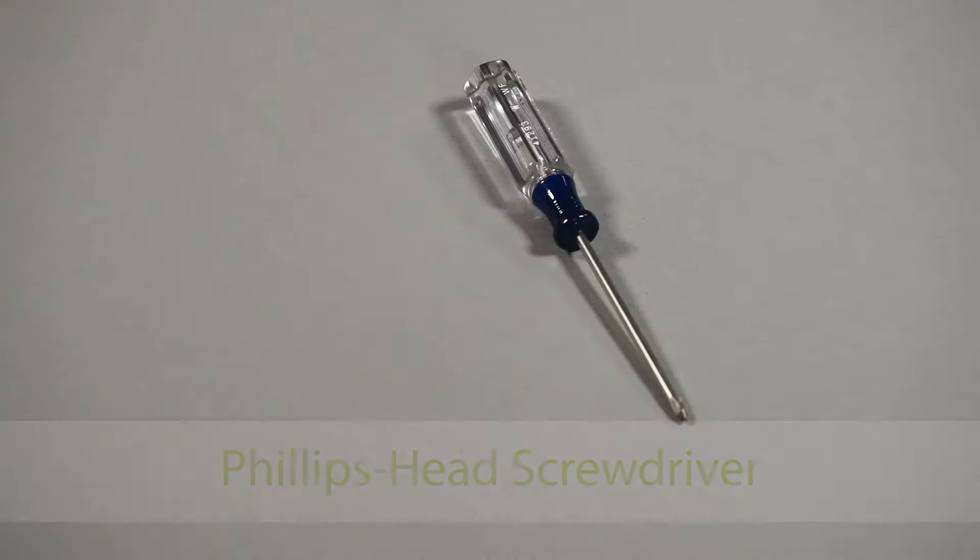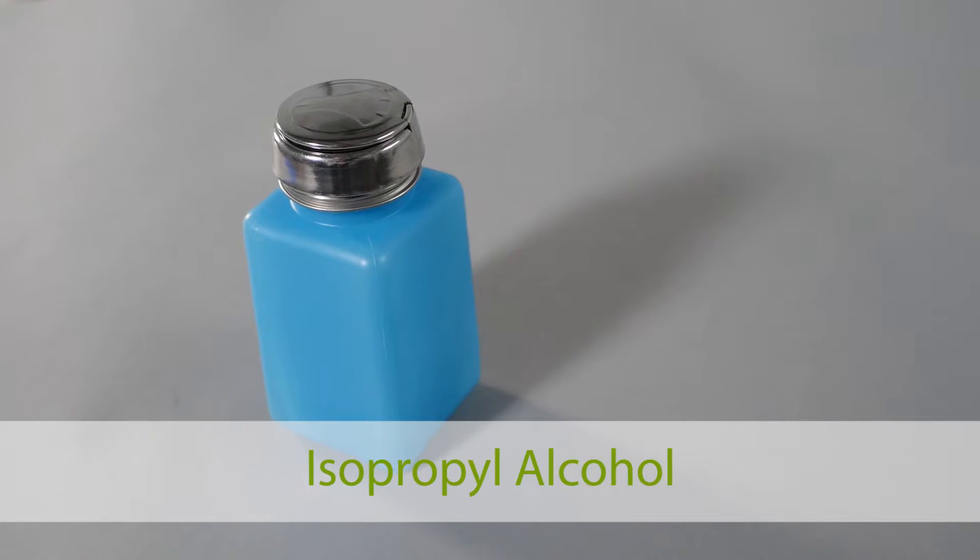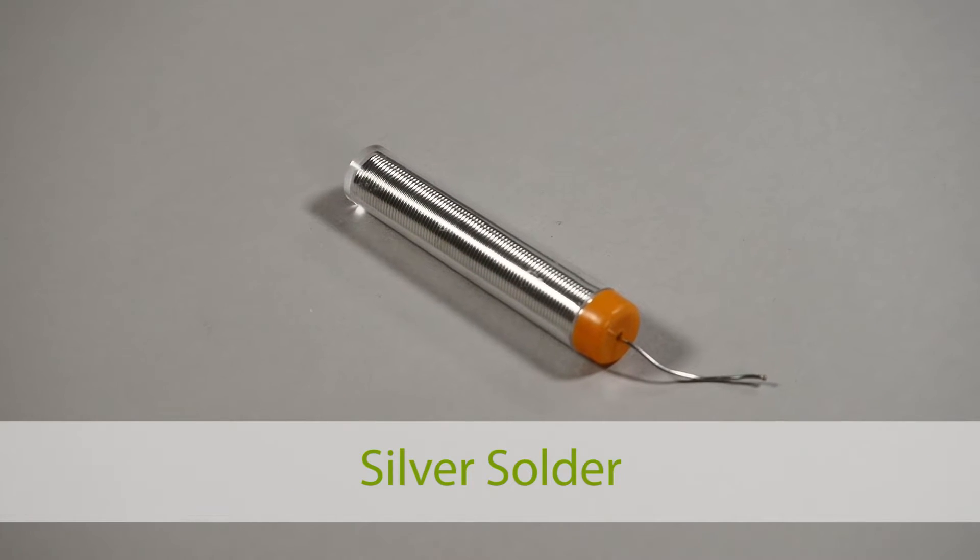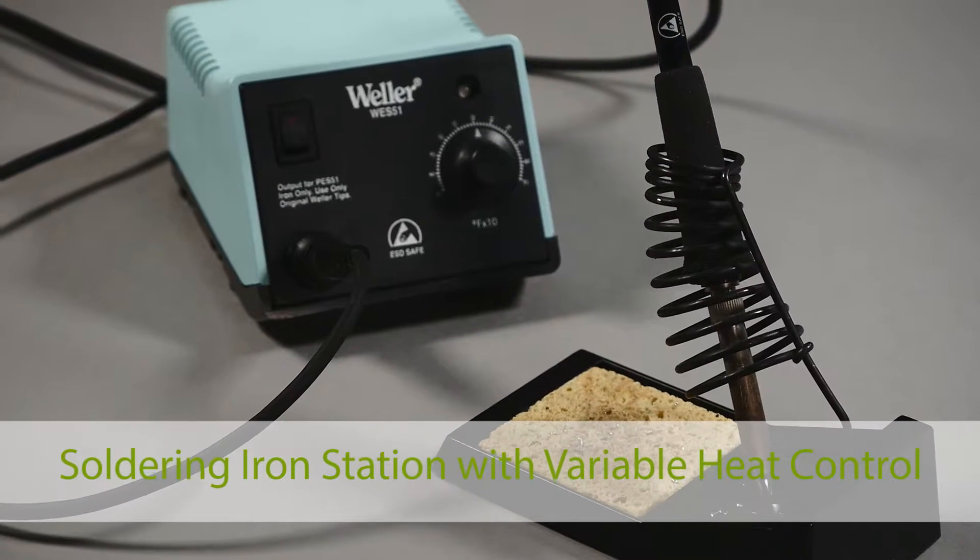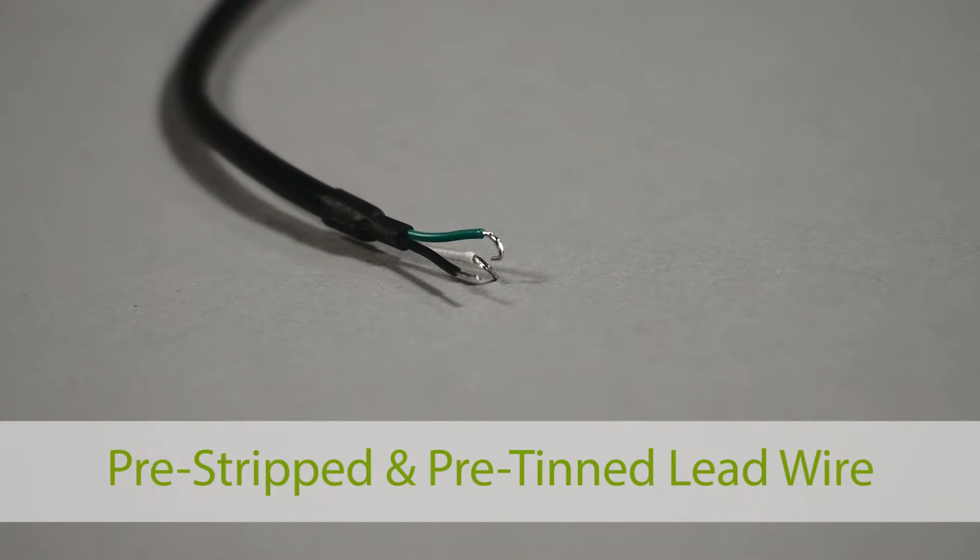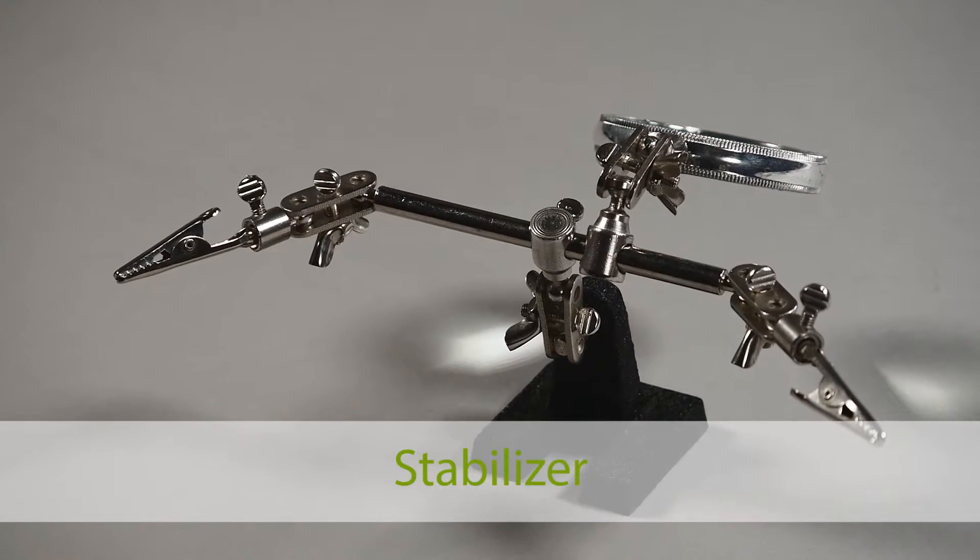For this video you will need a Phillips head screwdriver, two acid brushes, isopropyl alcohol, solder paste, silver solder, a soldering iron station with variable heat control, solder wick, a pre-stripped and tinned wire suitable for your application, and something to stabilize the connector.